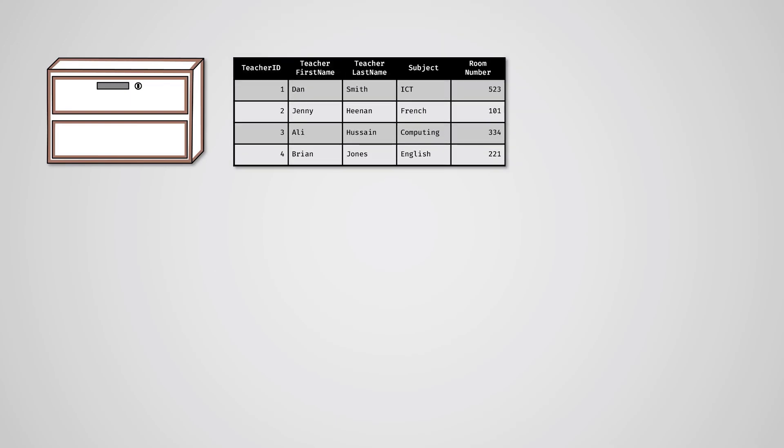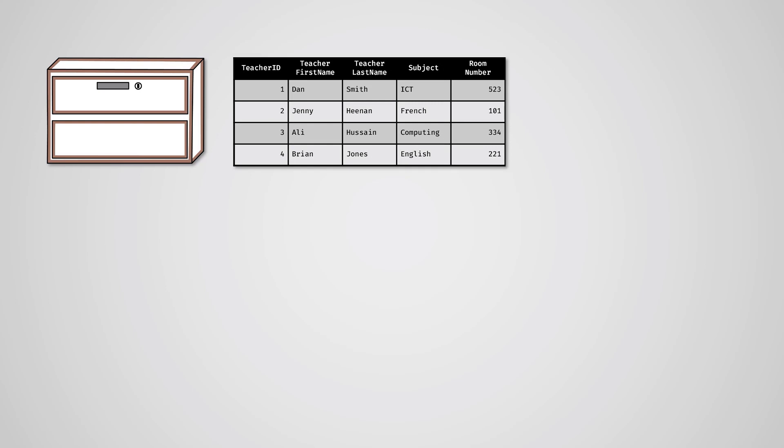So a database is a way of storing data in an organized way. Data is stored in tables which are made up of rows and columns. Each individual item of data is called a record and is a row in the database. A primary key is a unique column of data used to tell all records apart.